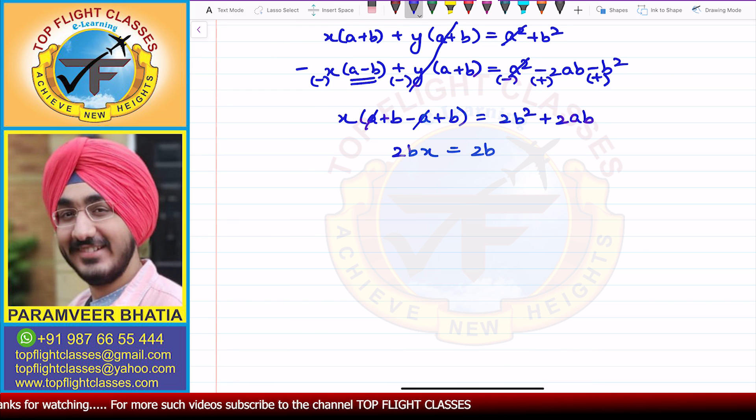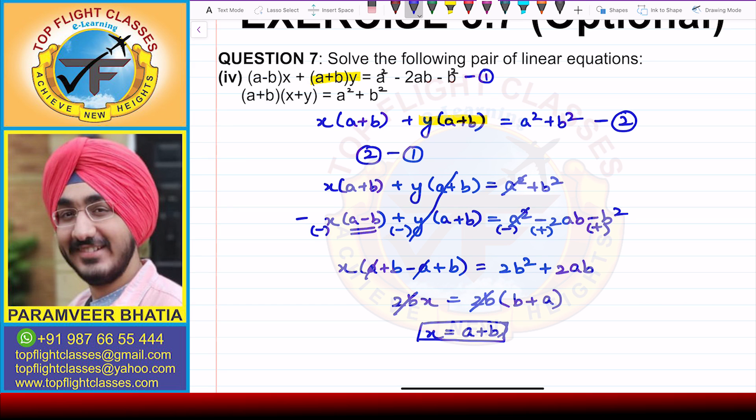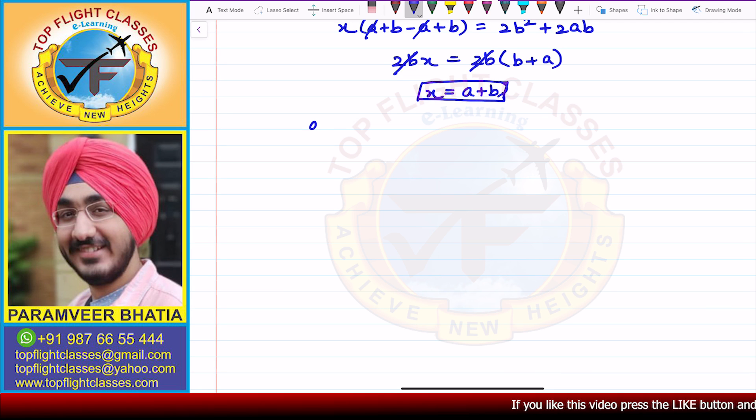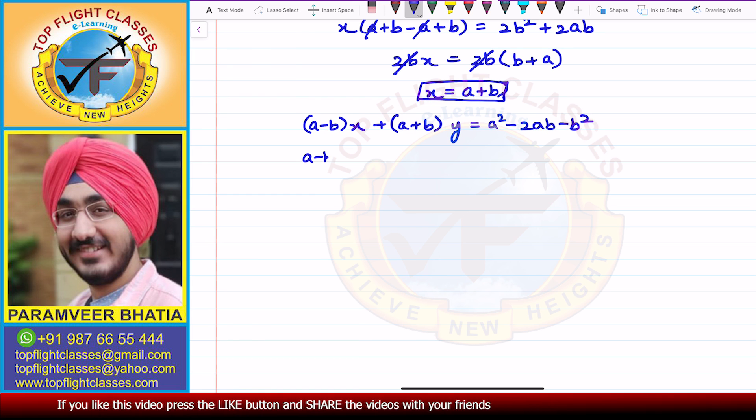Now I can put this in any of the given two equations. Let's put it in the first equation, which is (a-b)x + (a+b)y = a² - 2ab - b². So this is (a-b)(a+b) + (a+b)y = a² - 2ab - b².